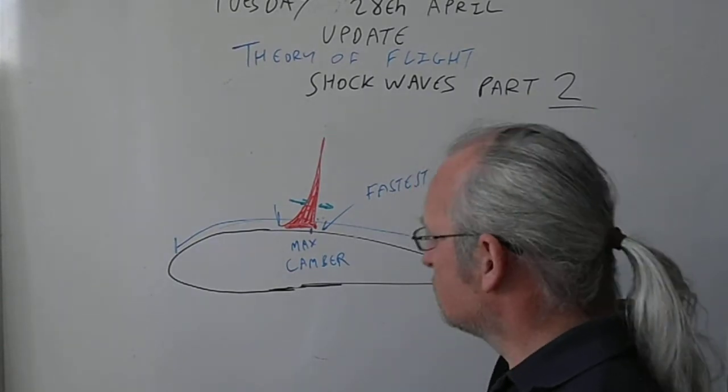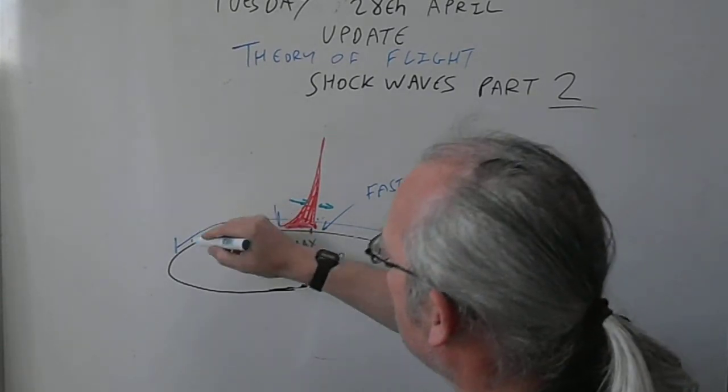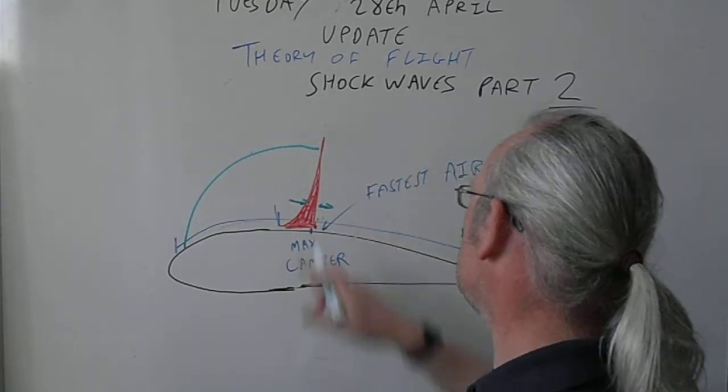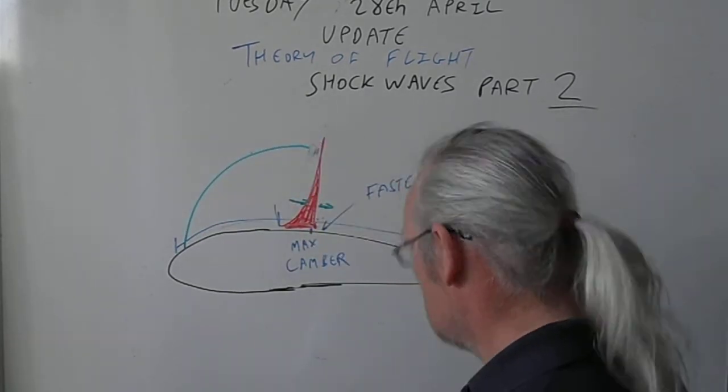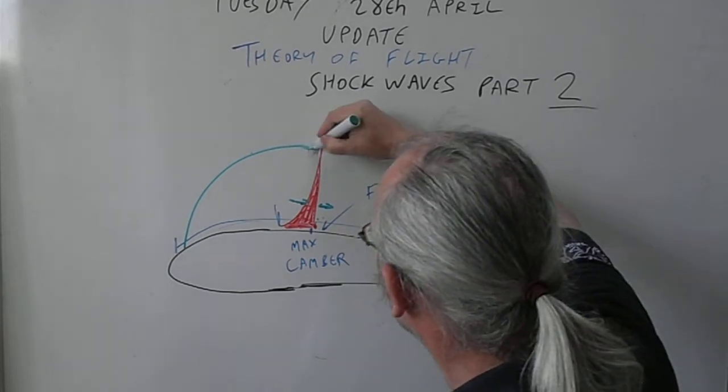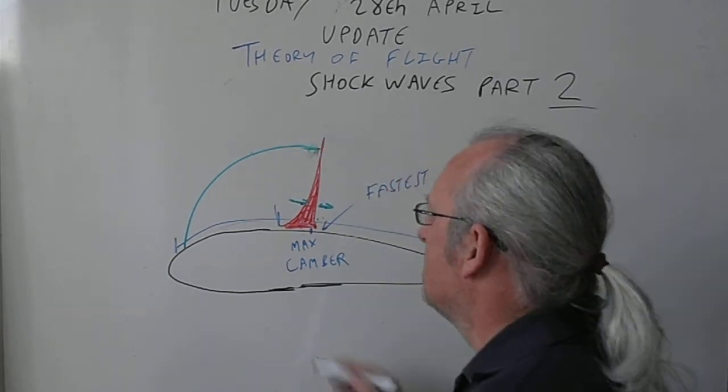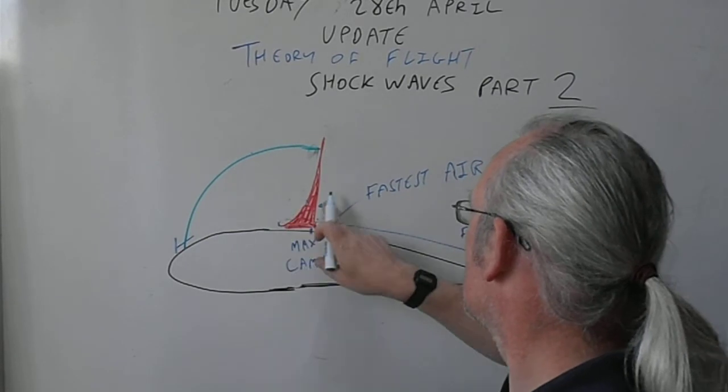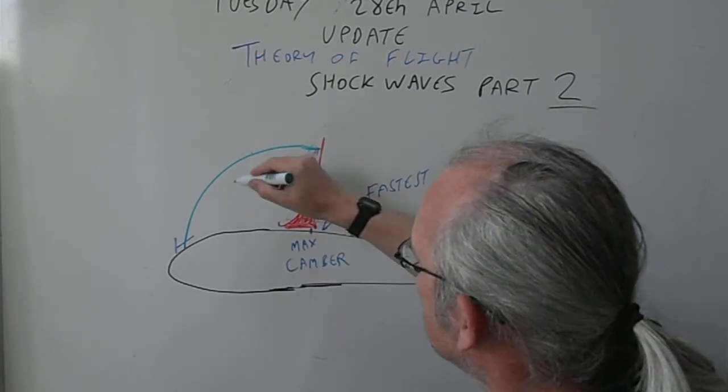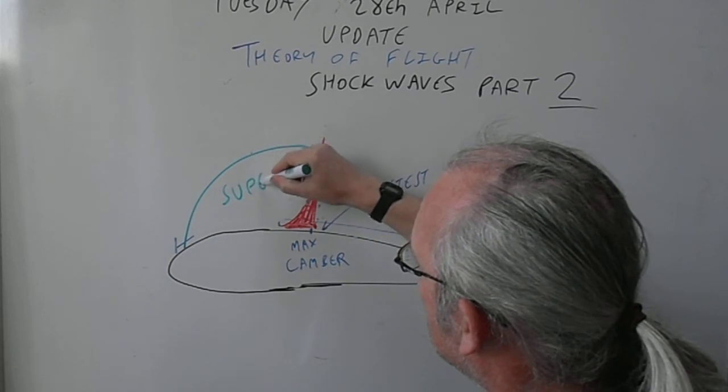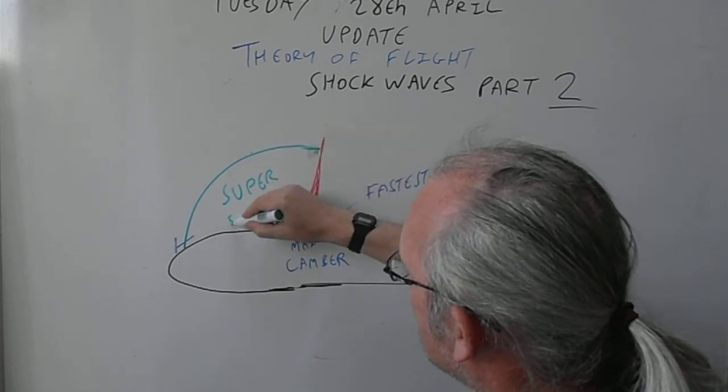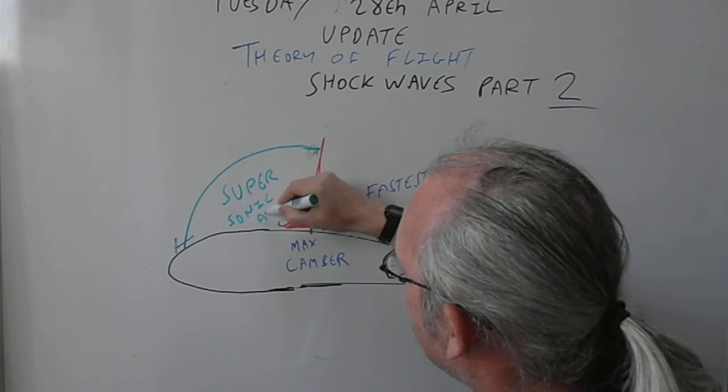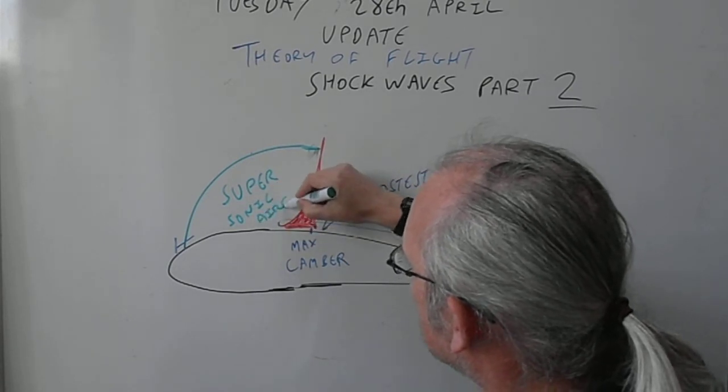And then it realizes that it can't go faster than the speed of sound and it all bumps up into a big queue. So what we'll find is this part here, this part, is supersonic airflow.